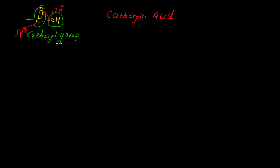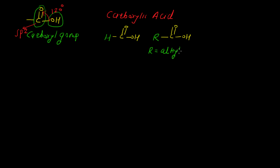When the carboxyl group is attached to a hydrogen or an alkyl group — for example, this carboxyl group attached to hydrogen, or attached to an R group where R indicates an alkyl group — such types of carboxylic acids are known as aliphatic carboxylic acid.